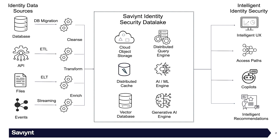Once it's in the data lake, we use highly scalable cloud object storage, which allows us to store all the historical changes to your identity repository so you can time-travel and look at your access data as it was at any particular point in time. We also use distributed caches to give you lightning-fast dashboards, and vector databases to store the embeddings from generative AI models.